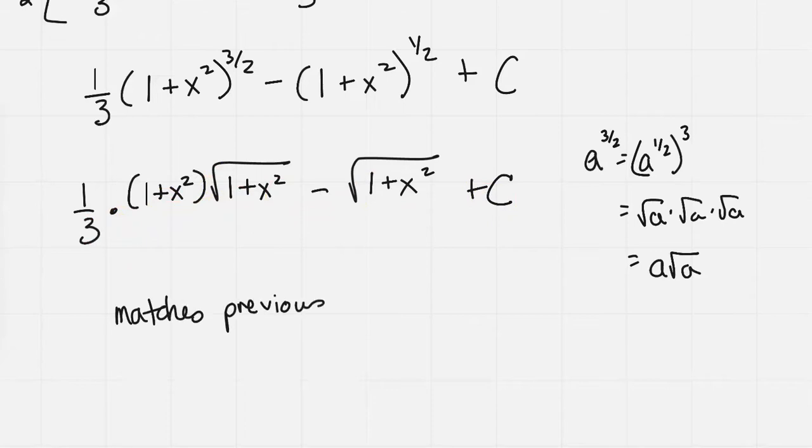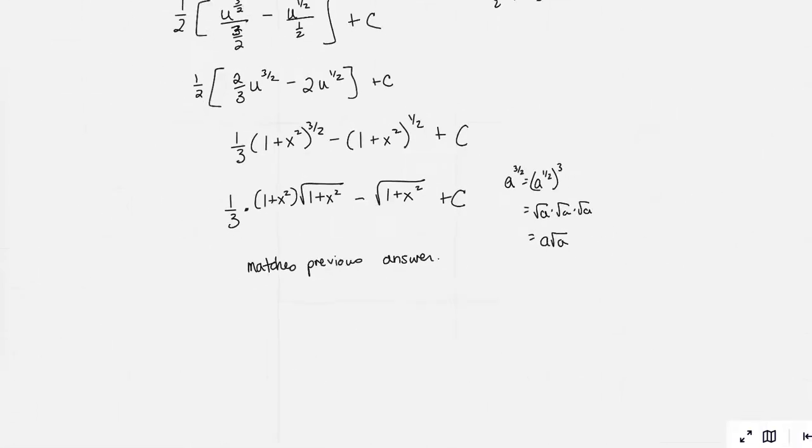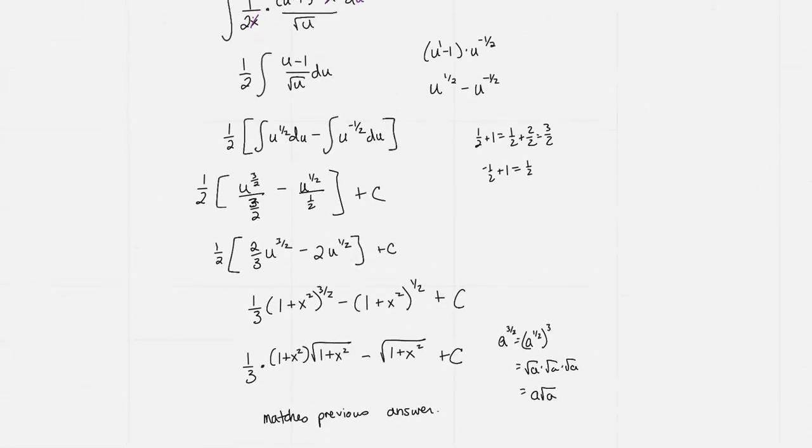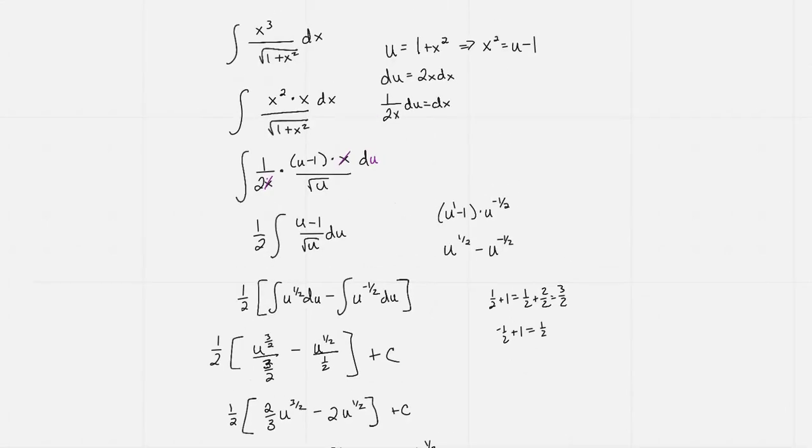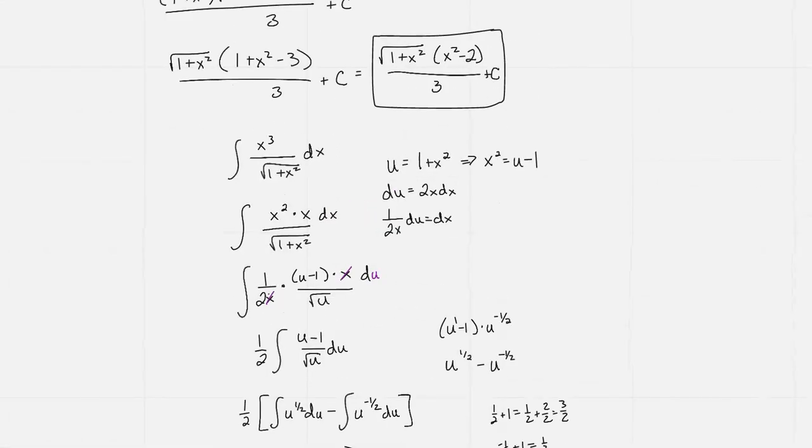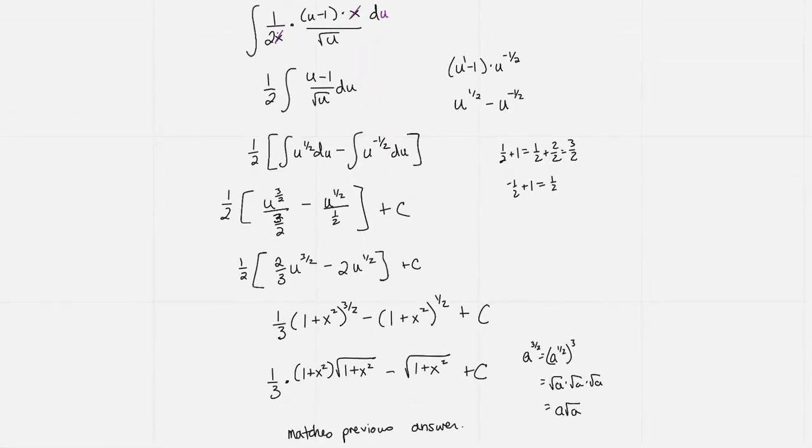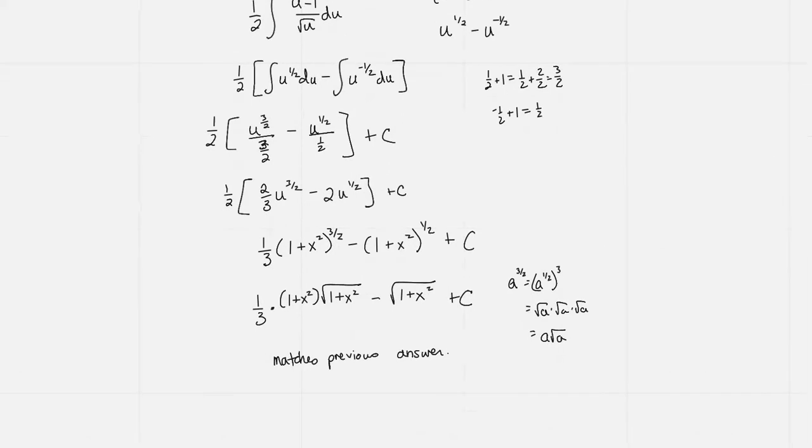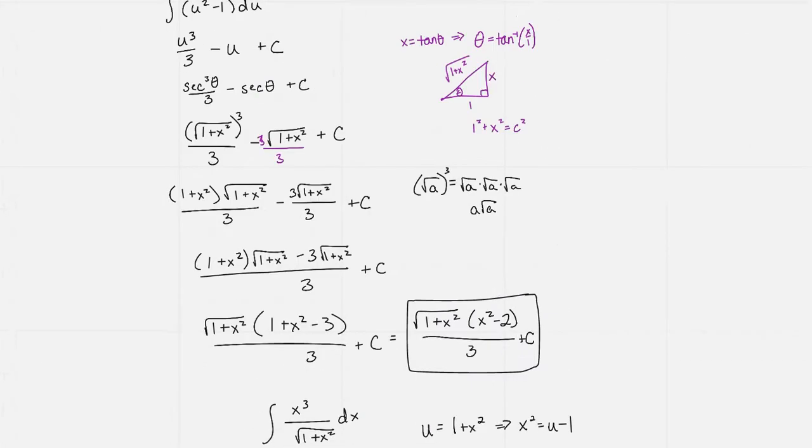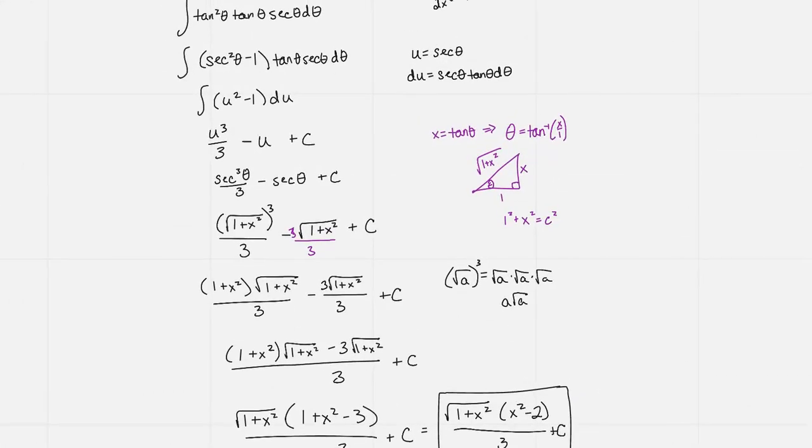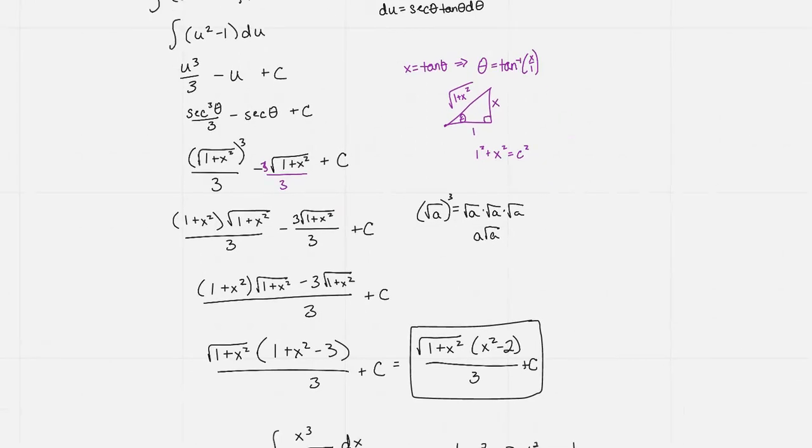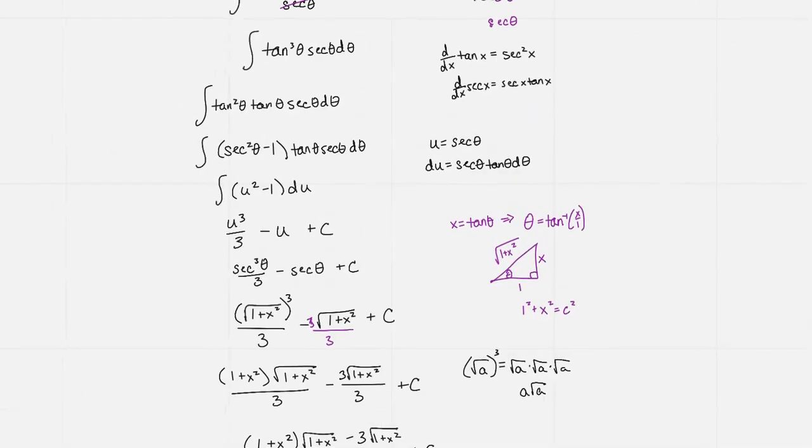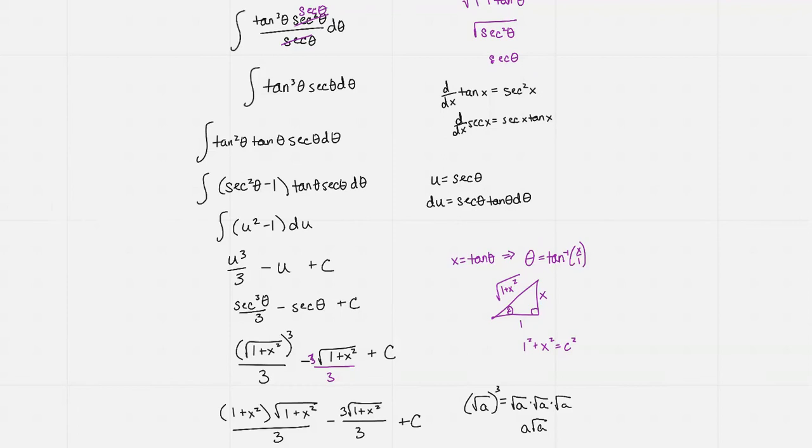So I'm getting the same answer, but I used two different methods. Because I tend to write every single step, it's not like it's less work. But I think possibly there's less room for error on the second method, because I didn't have to bust out with a right triangle or worry about inverse tangent. The complexity of the first method was a little bit more.